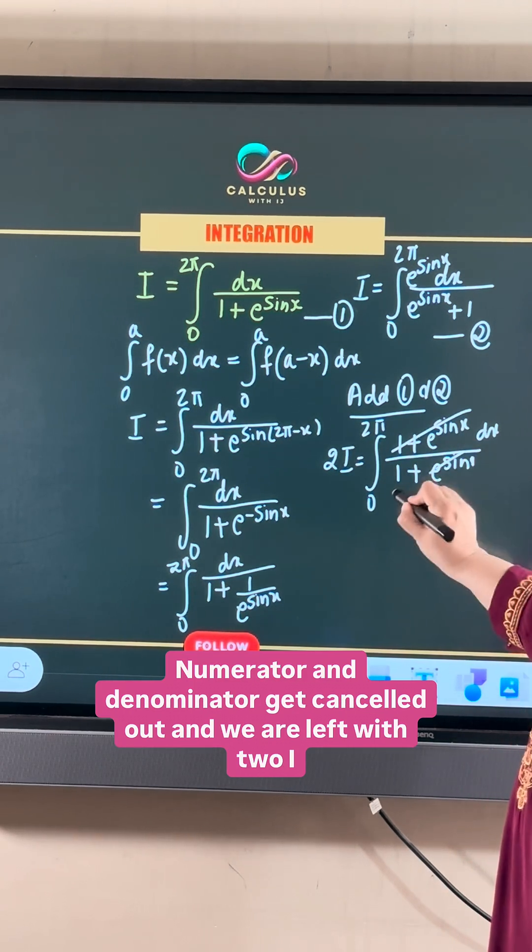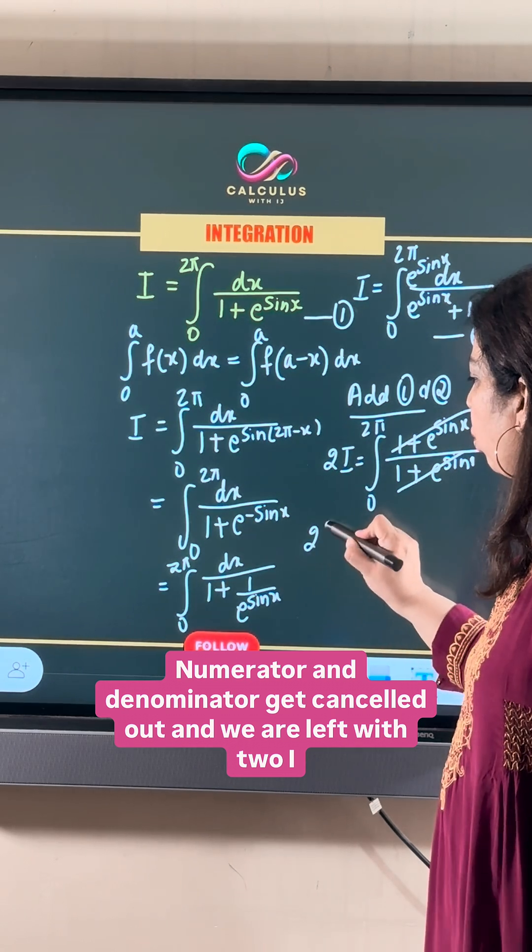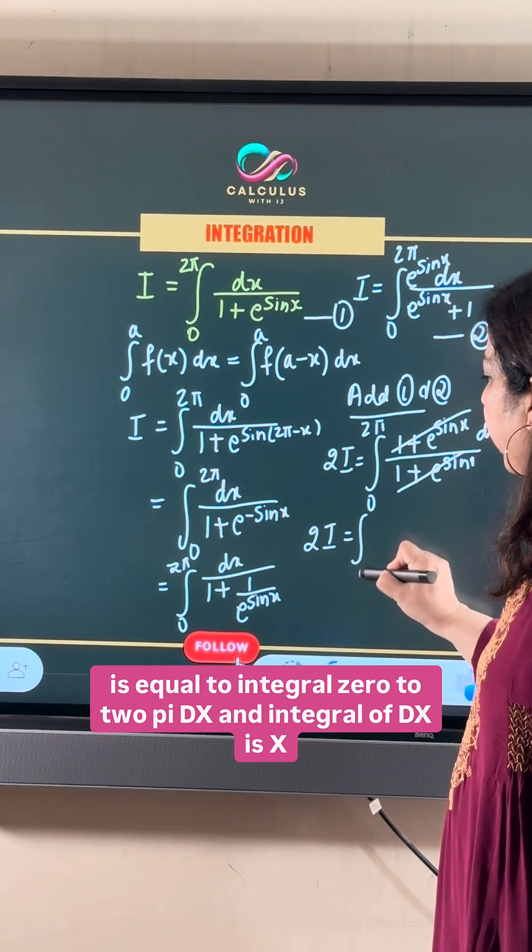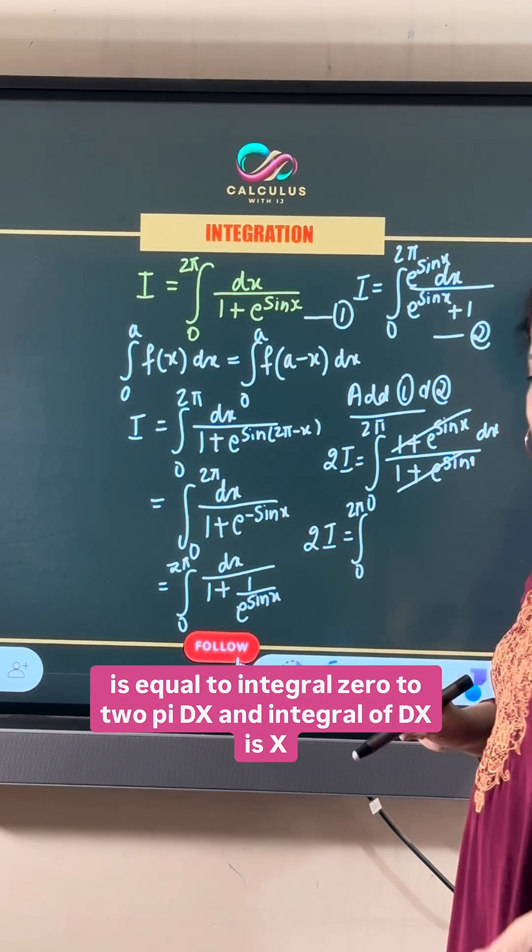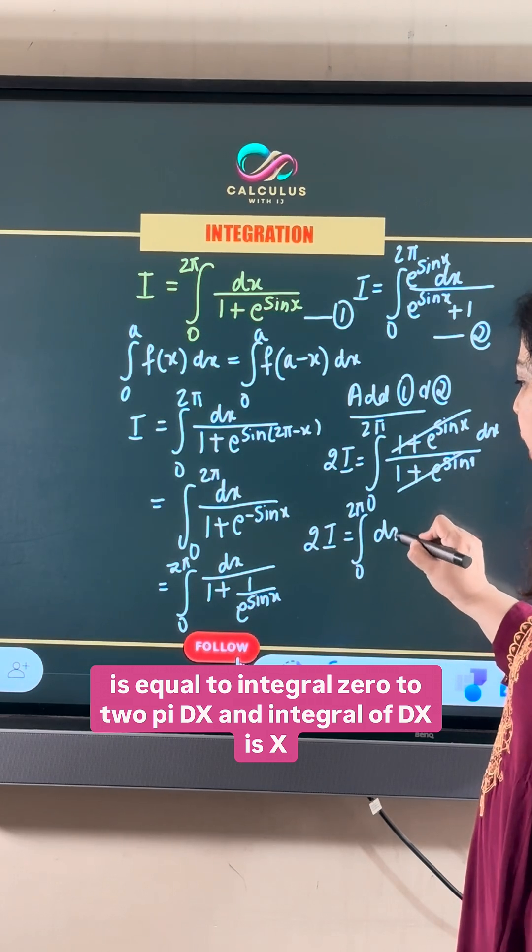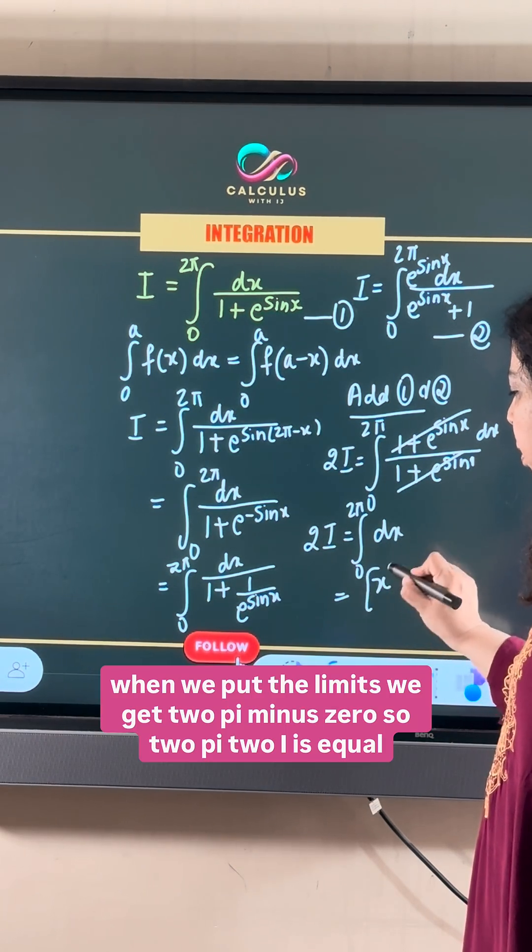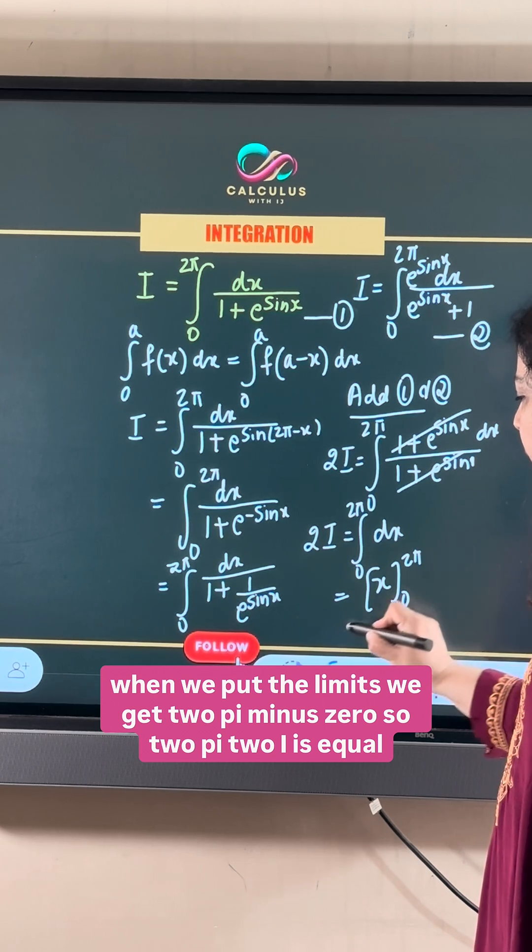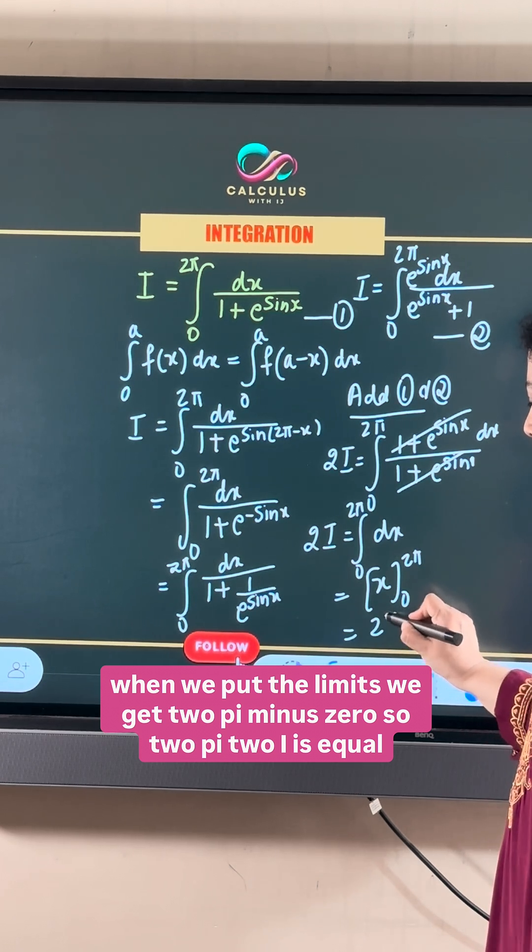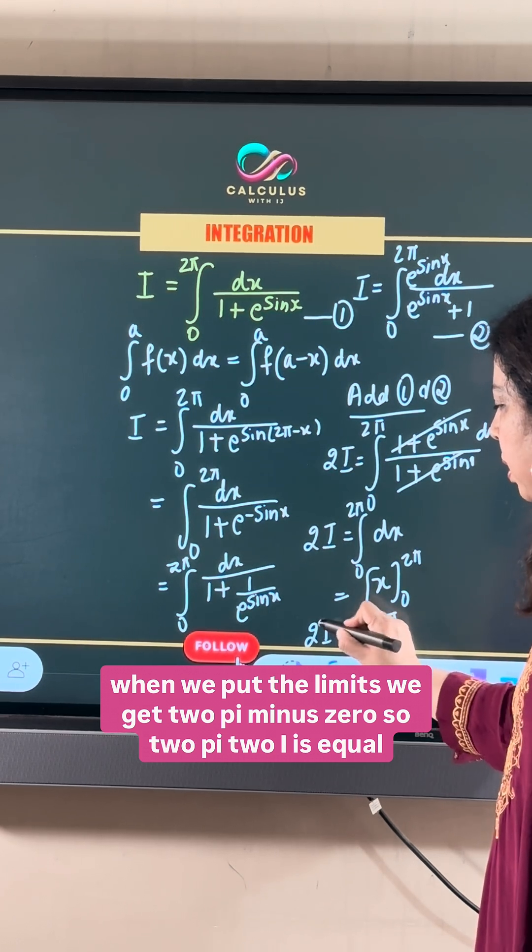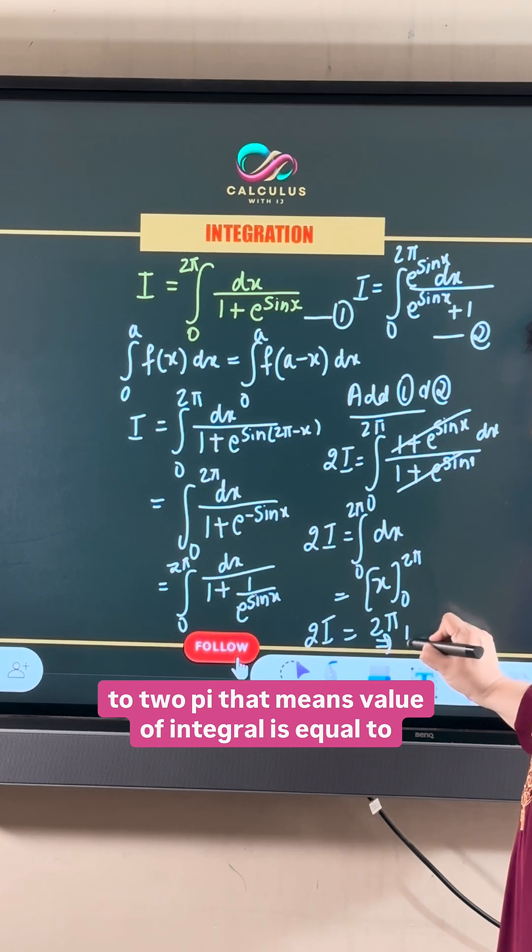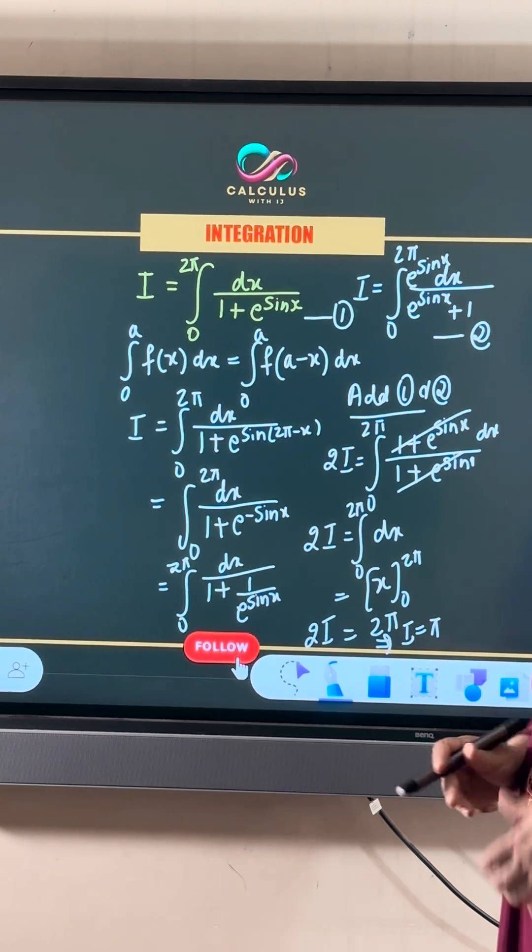We are left with 2I equals integral 0 to 2π dx, and integral of dx is x. When we put the limits, we get 2π minus 0, so 2π. 2I equals 2π, which means the value of the integral is equal to π.